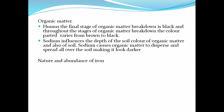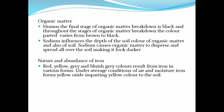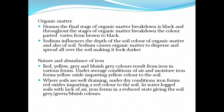We also have the nature and abundance of iron. Red, yellow, gray, and bluish-gray colors result from iron in its various forms. Under average conditions of air and moisture, iron forms yellow oxide, imparting a yellow color to the soil. Where soils are well-draining under dry conditions, iron forms red oxides, imparting a red color. In waterlogged soils with lack of air, iron forms a reduced state, giving the soil gray, green, or bluish colors.